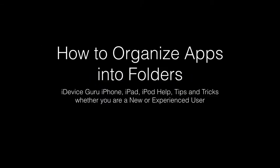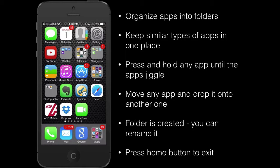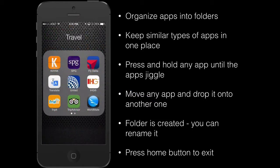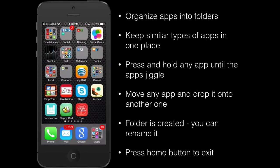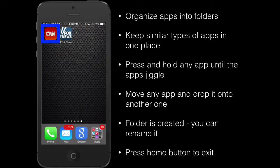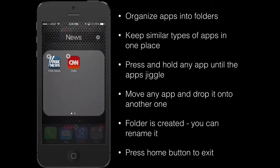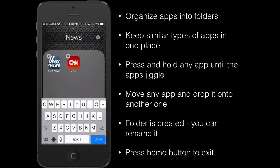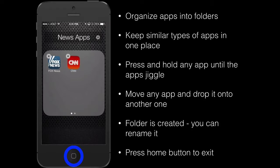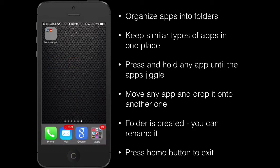Tip number seven: I'm going to show you how to organize your apps into folders so they're easier to find. On my home screen I have several apps in folders, grouped by similar type — for example, a travel folder with all travel apps in one place. To create a folder, press and hold on one app until the apps jiggle, then move it onto another app and drop it. It will create a folder and you can rename it — for example, 'News Apps'. When you're done, click Done and press the home button to exit. You've now created your folder.